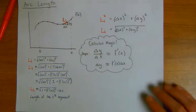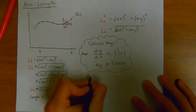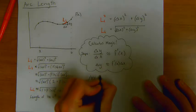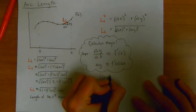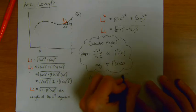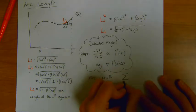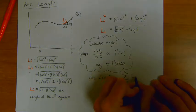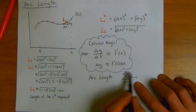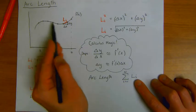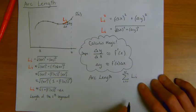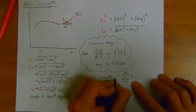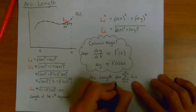And so the total arc length is going to be given by the sum of all of the segments as i goes from 1 to n of each of the segments, each of these L sub i's. This is just saying that I'm adding up each of these L's, these line segments.